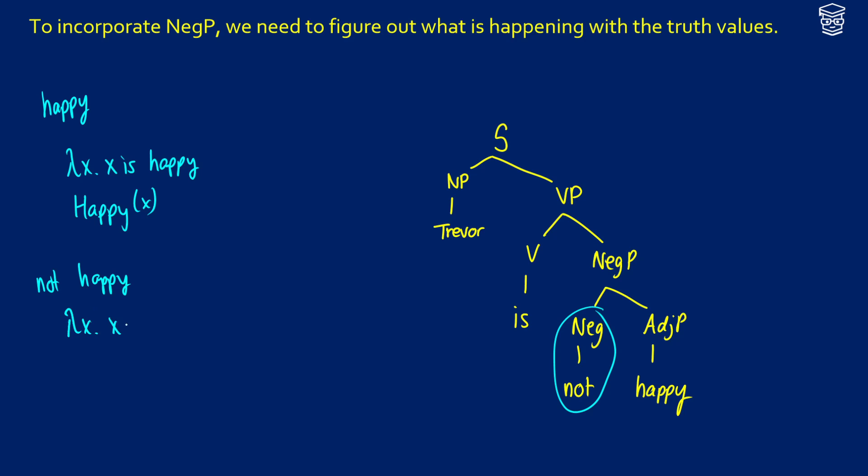We get something like lambda x.x is not happy. And in terms of predicate logic, we'd be saying not happy x. So what exactly should we be doing here in terms of the meaning of not?